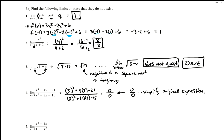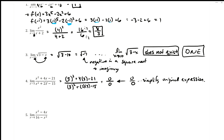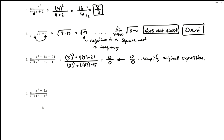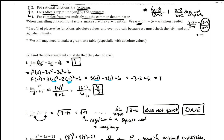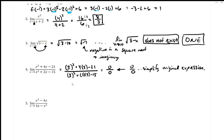We might also need a calculator to help. So for rational functions — meaning a big fraction like in number four and number five — what we're going to do is try to factor and see what happens. Let's factor before we simplify.